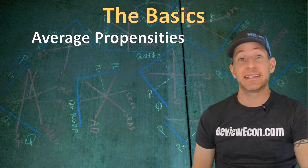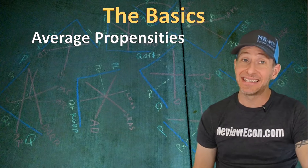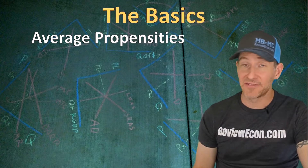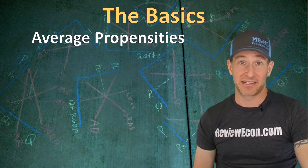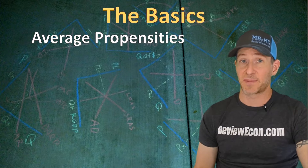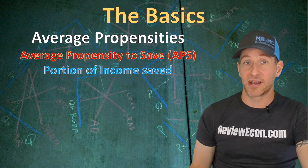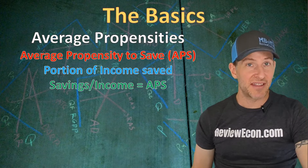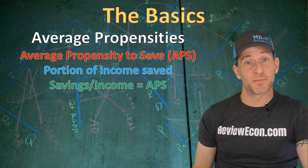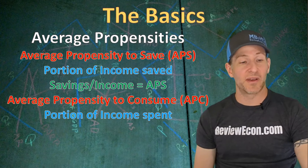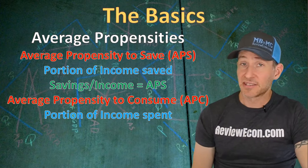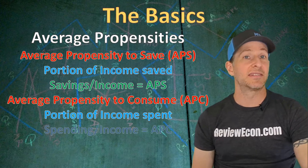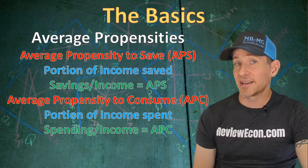The next thing you need to know is average propensities. A propensity is a tendency to do something. We're going to look at the average propensity to save — the tendency for consumers to save — and the average propensity to consume. The average propensity to save is the portion of disposable income that is saved rather than spent. The formula is the amount of savings divided by disposable income, expressed as a decimal. The average propensity to consume, or APC, is the portion of disposable income that is spent. The formula is total spending divided by disposable income.